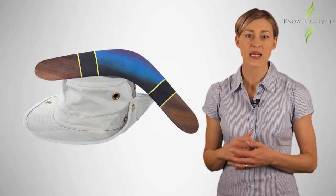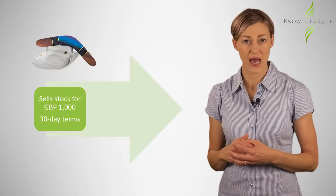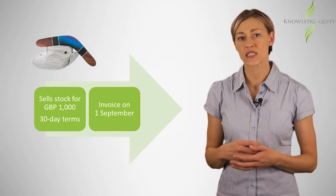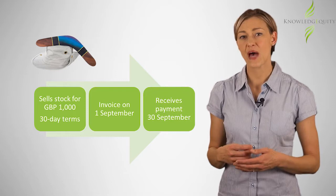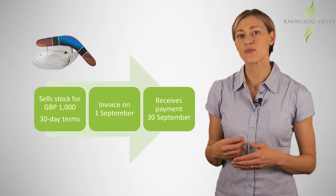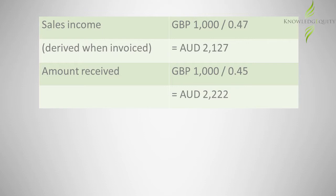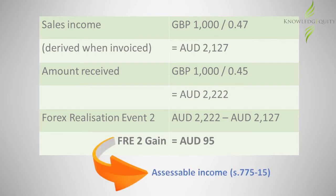Aussie Pty Ltd sells stock to an overseas purchaser for 1,000 GBP on 30-day credit terms. At the time of invoice on September 1, the spot rate was 0.47. The invoice was paid on September 30, when the spot rate was 0.45. This example demonstrates Forex Realisation Event 2, or FRE2, and the $95 gain is included in assessable income in accordance with section 775-15.